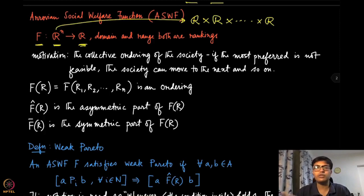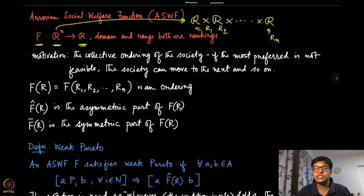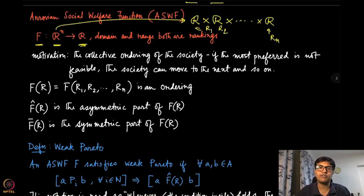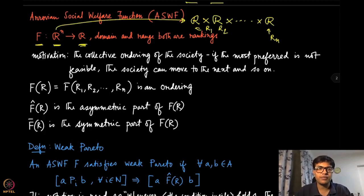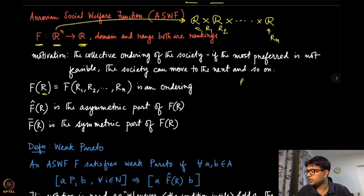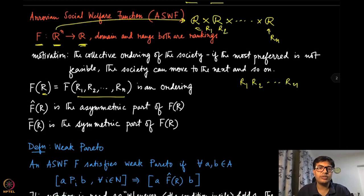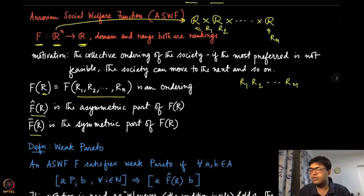Each player i has a weak preference order Ri over the alternatives. Collectively, we try to produce a total ranking for the entire society. The Arrovian social welfare function, capital F, takes the profile r = (r1, r2, ...) and outputs an ordering. We denote F-hat of r as the asymmetric part of F(r), and F-bar of r as the symmetric part of F(r).